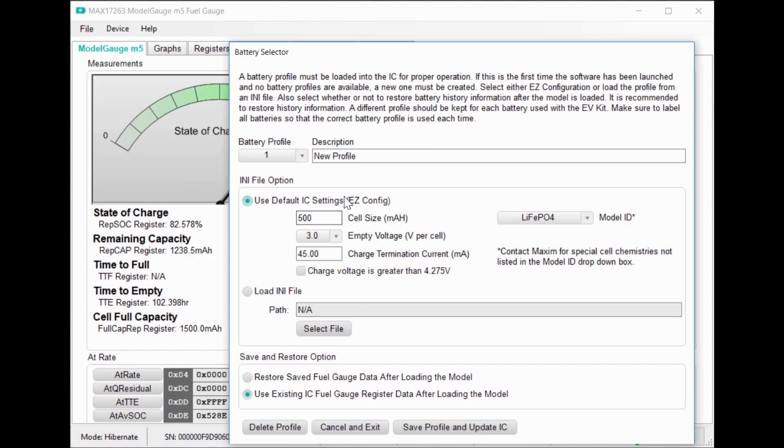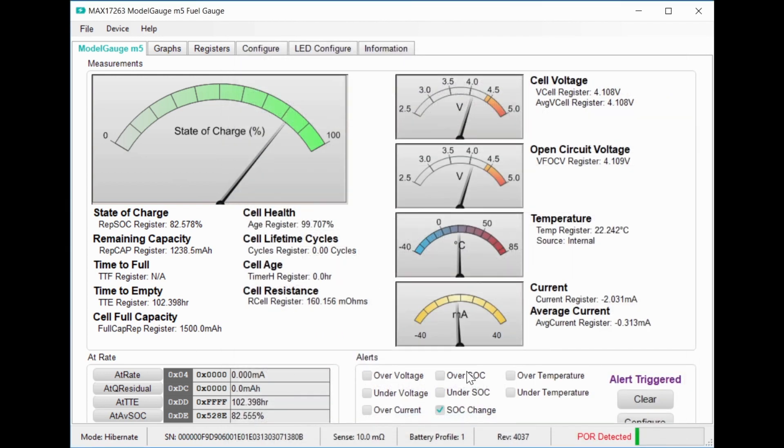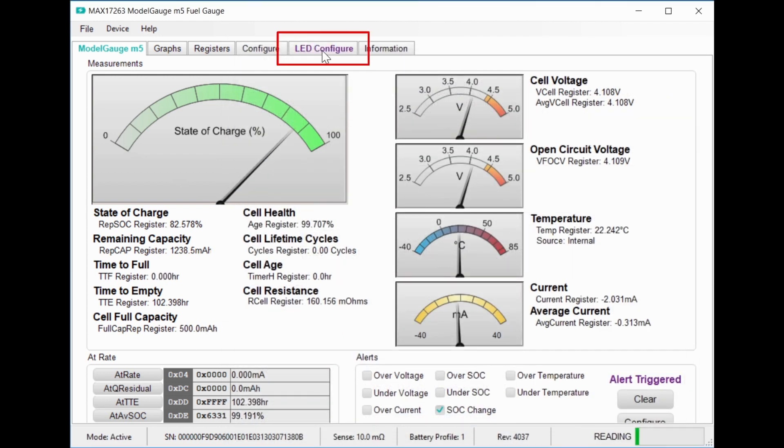I'm using the easy battery characteristics since I didn't characterize my battery, and it's still very accurate. Now let's head over to the LED configuration tab, and I'll show you the features.